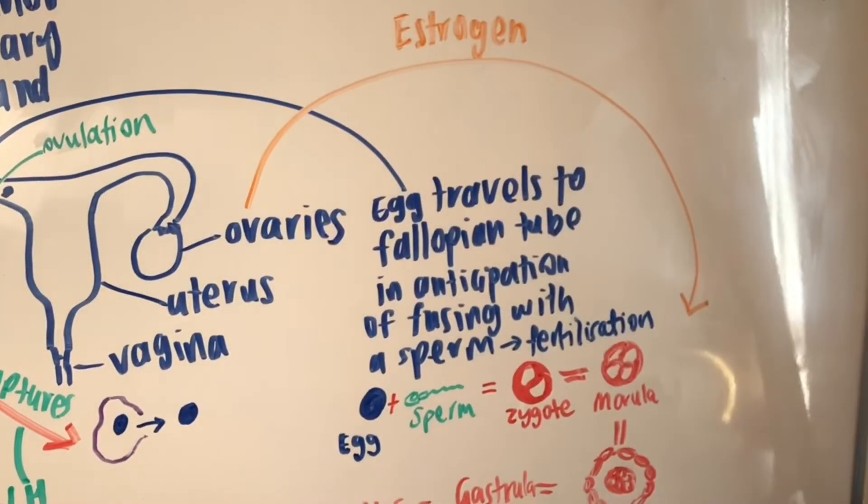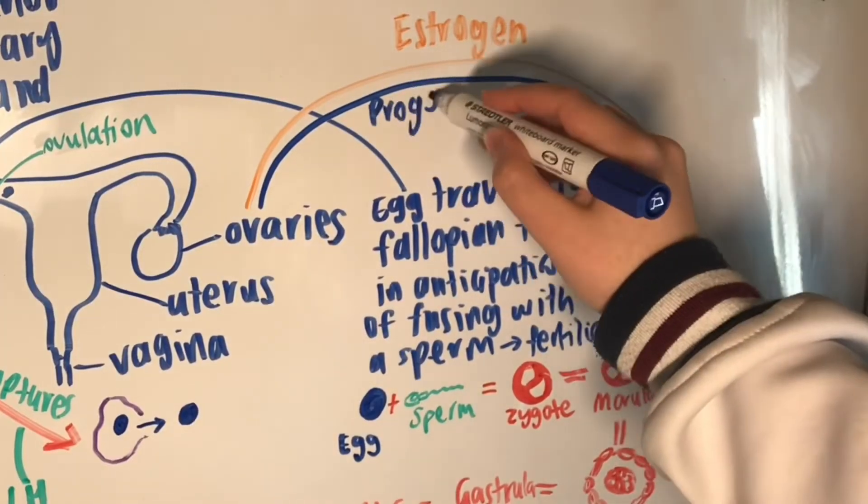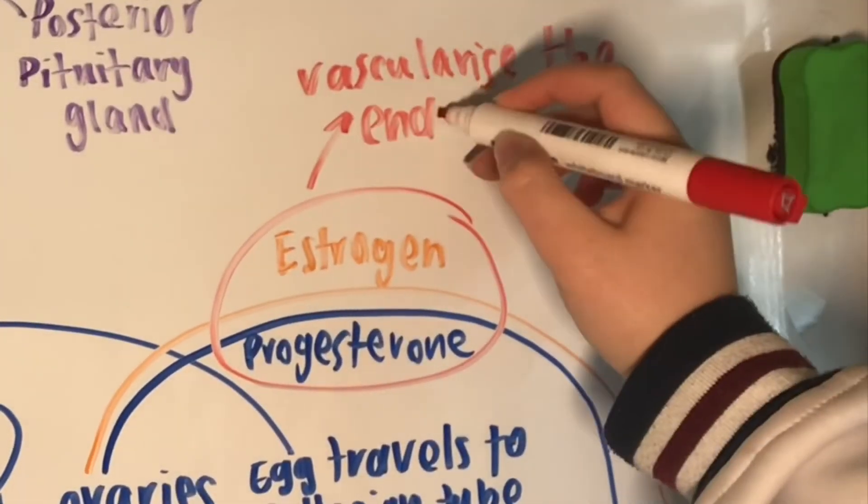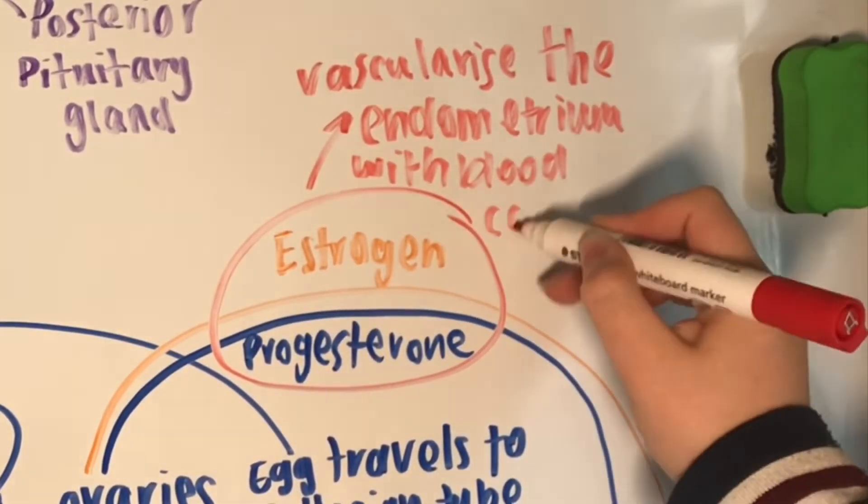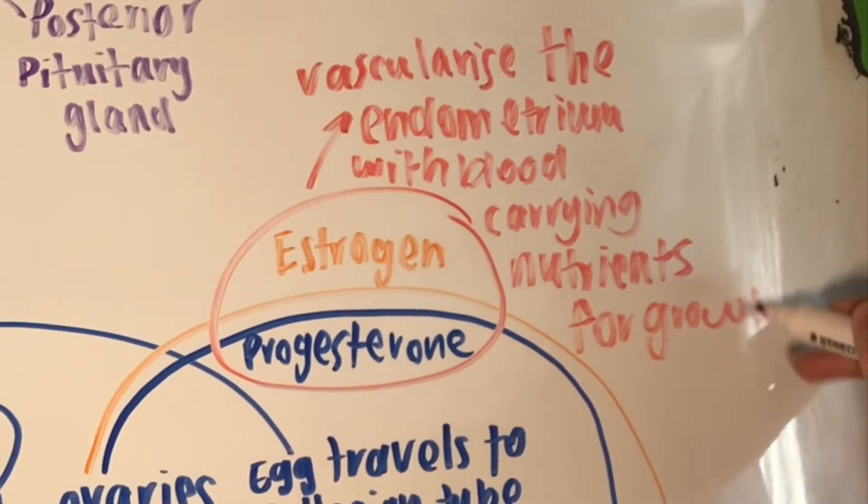After three months, the corpus luteum is no longer needed and the ovaries and placenta take over the corpus luteum and continue the secretion of progesterone and estrogen to maintain the endometrium that is vascularized with blood and nutrients for the growth and development of the fetus.